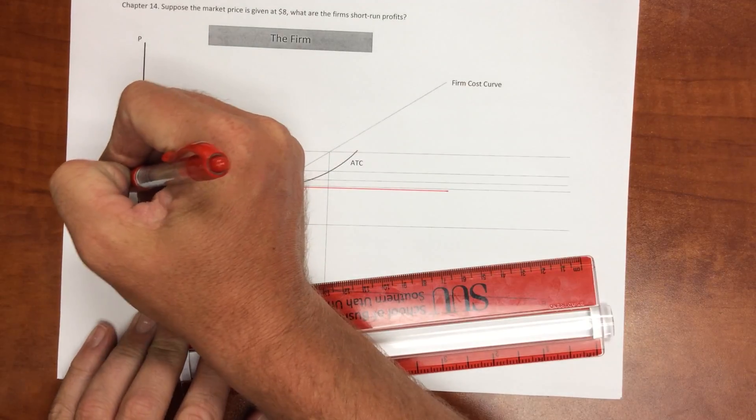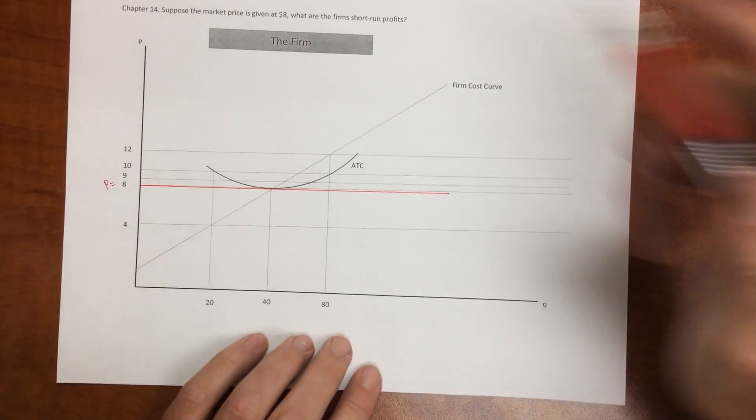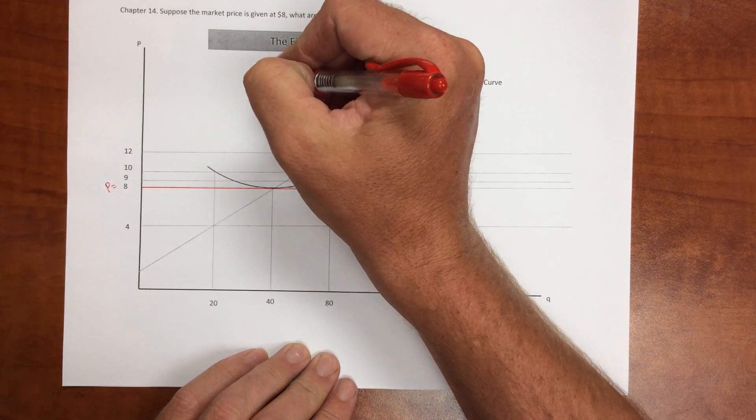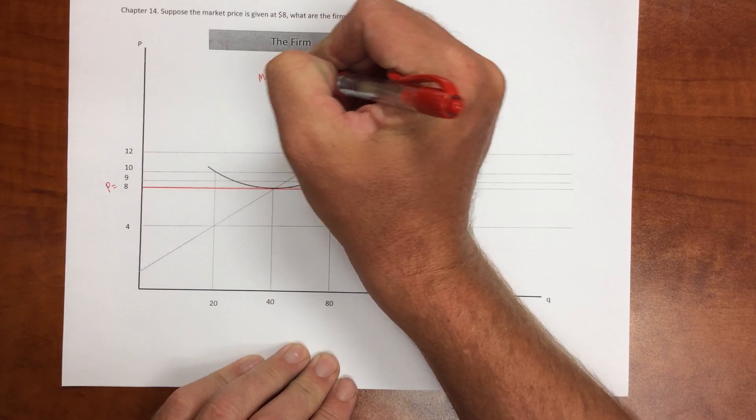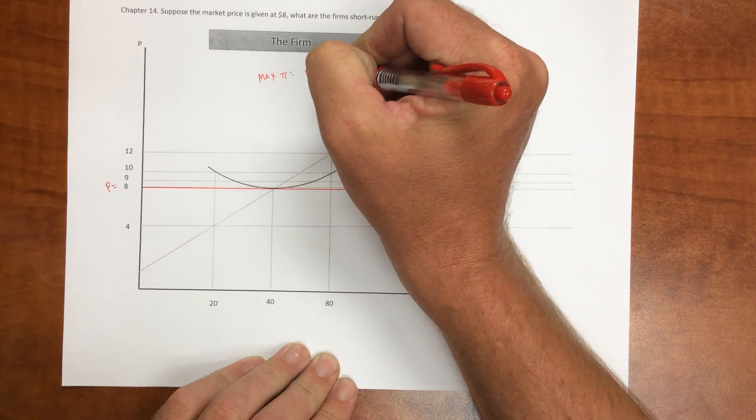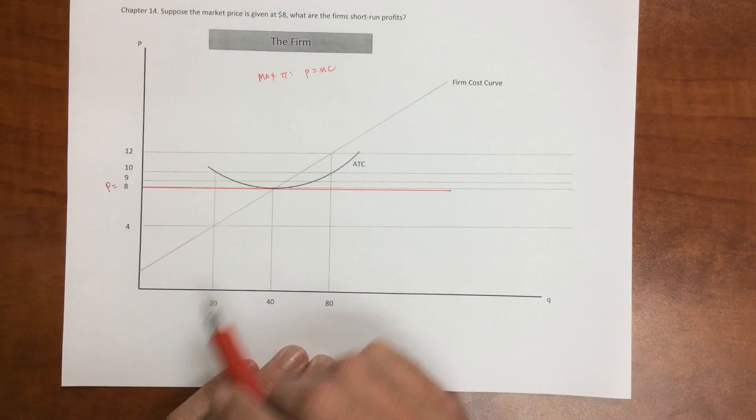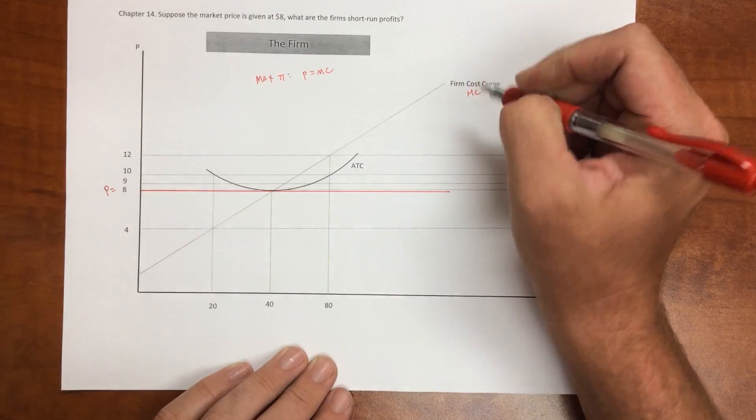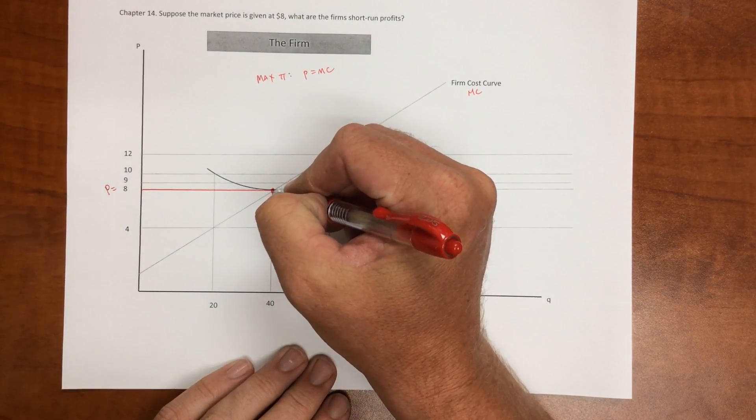Price is $8. Well, the firm to maximize profits, the maximizing profit rule is that price equals marginal cost. In this case, our upward sloping cost curve represents our marginal cost, so this is the point where price equals marginal cost.